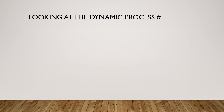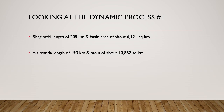Looking at this dynamic river process: Bhagirathi, which emerges from the Gomukh glacier near Tapuban, has a length of 205 kilometers and a basin area of 6,921 square kilometers. Alaknanda has a length of 190 kilometers but a basin area of 10,882 square kilometers. So Alaknanda's potential volume of water is about 55 percent more than that of Bhagirathi, although Bhagirathi is slightly longer.